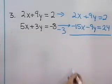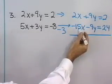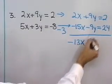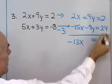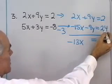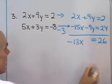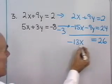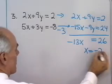Now add the left sides together: 2x plus negative 15x is negative 13x. 9y plus negative 9y is 0, and 2 plus 24 is 26. So I have negative 13x is equal to 26. Divide both sides by negative 13, and x is equal to negative 2.